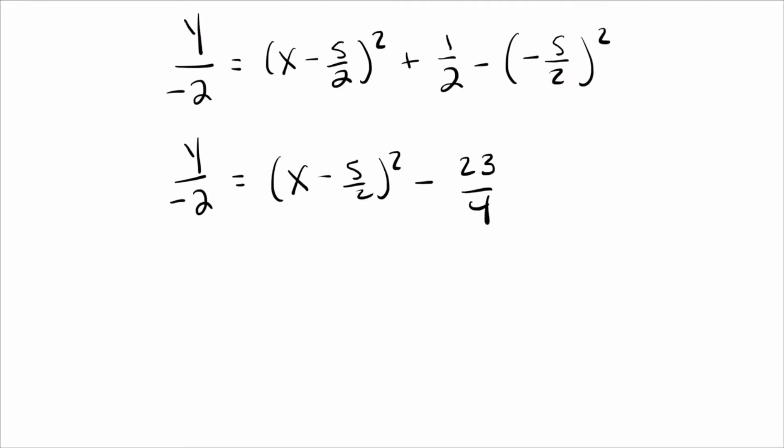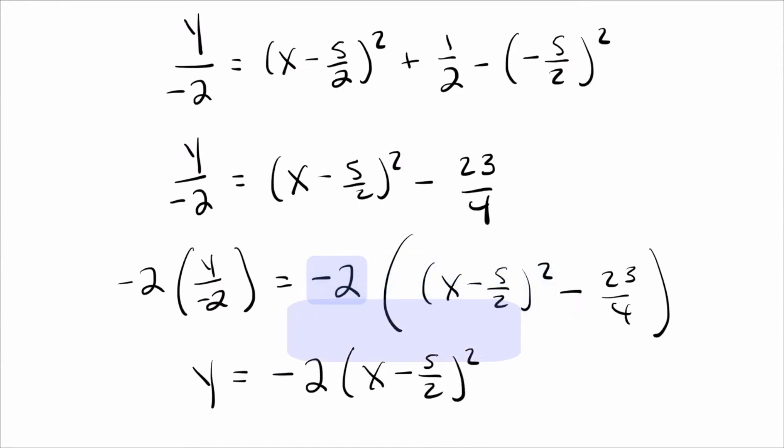Okay, so all that's left now is on the right, right? We've completed the square. That's done. On the left, I just need to pull that negative 2 back over. So I'm going to take both sides and multiply them by negative 2. So I do negative 2 on the left, and then on the right, take both of these parts and multiply them by negative 2. So if I do that, on the left, the negative 2s cancel, and I'm just left with y. On the right, if I distribute that in, I put the negative 2 in front of this part. Then over here, I get negative 2 times negative 23 over 4. That is positive 23 over 2. And there you go. You did it. You completed the square with the number in front.